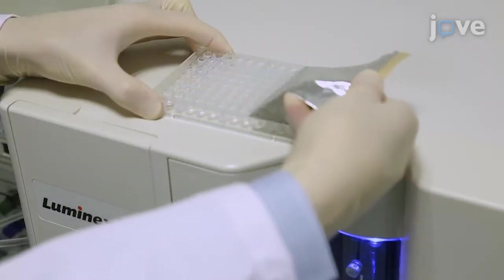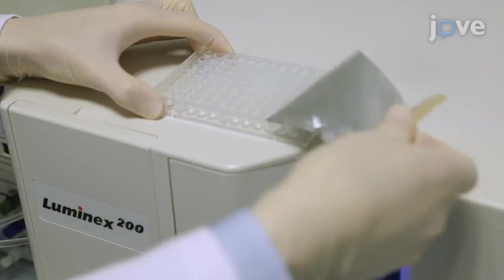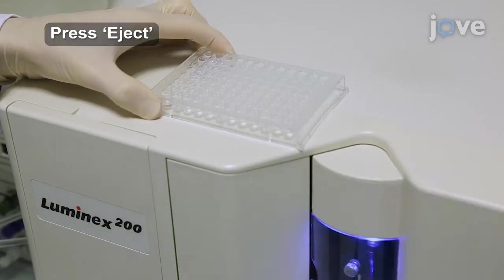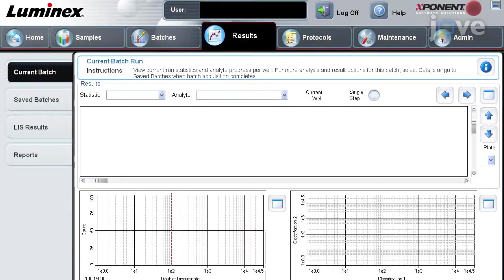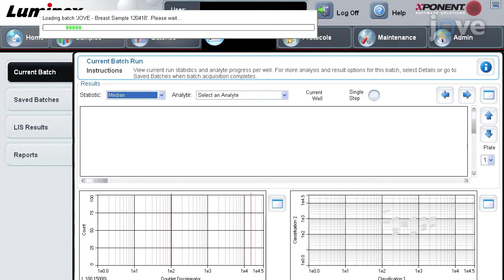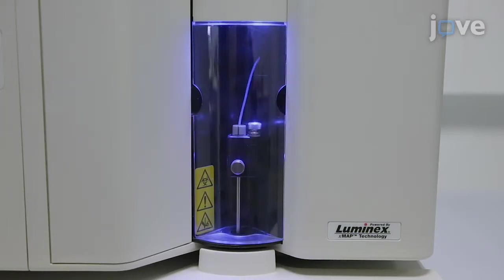Now remove the aluminum seal from the reaction plate, eject the plate loader tray, and load the plate into the analyzer. Next, click on retract. Then run batch to initiate the analyzer.